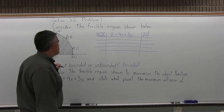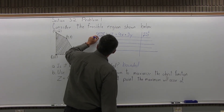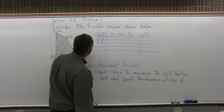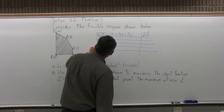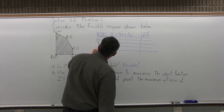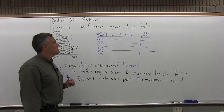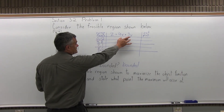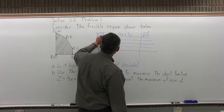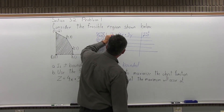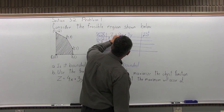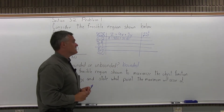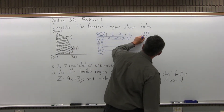Each row will test a corner point. You can list them in any order as long as you don't miss any. The corner points are (0,12), (4,8), (7,1), (8,0), and (0,0). I'm going to test each one. The first corner point, (0,12), means x is 0 and y is 12. So z equals 4 times 0 plus 3 times 12. That gives 0 plus 36, so the output at that corner point is 36.